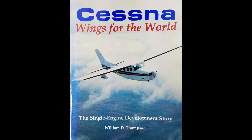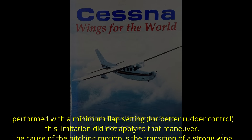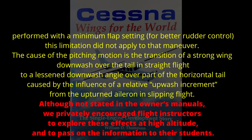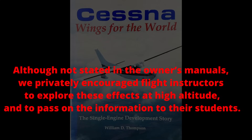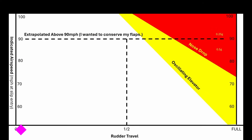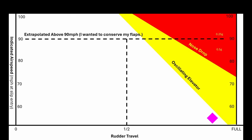These explanations aren't ideas I've pulled out of thin air. This is how Bill Thompson, Cessna's former manager of flight tests and aerodynamics, explained things in his book 'Wings for the World.' He goes on to say: 'Although not stated in the owner's manual, we privately encouraged flight instructors to explore these effects at high altitude and pass on the information to their students.' So decades ago I went out and did this in various Cessnas, and I've done it again in the Cessna 170B specifically. The vertical scale of this chart is the speed we were at when we started slipping, and along the bottom is the amount of rudder travel I used. I didn't test anything above 90 mph to conserve my flaps. This chart is for all 40 degrees of flaps; we were loaded at the forward edge of the utility category, between 1800 and 1850 pounds.